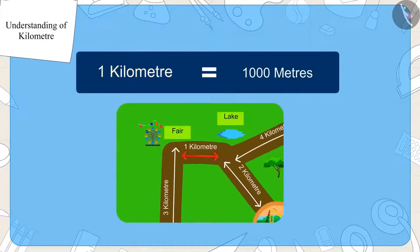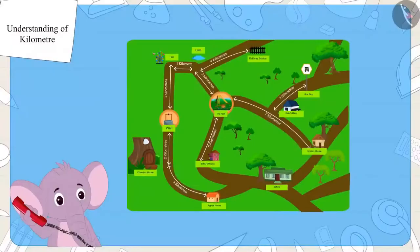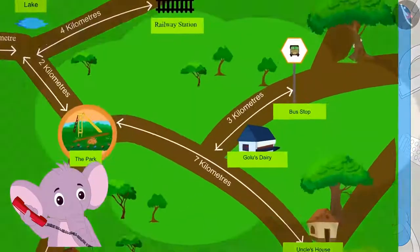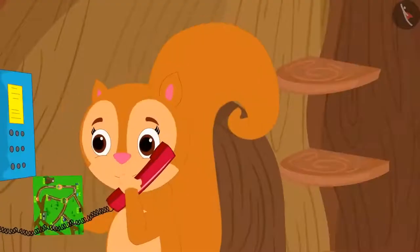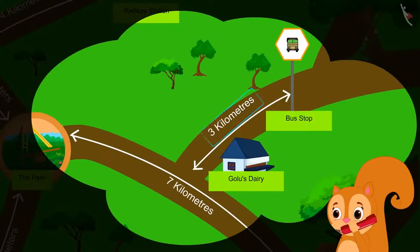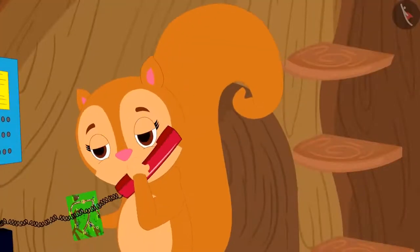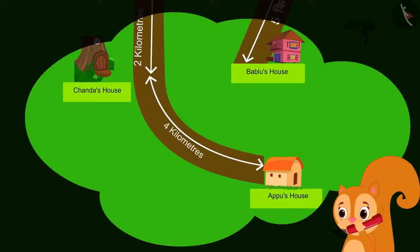One kilometer is equal to one thousand meters. Appu told Chanda, can you see Golu's dairy on the map? The dairy is three kilometers away from the bus stop. Chanda quickly noticed the places on her map and also saw the distance written between them. Chanda said to Appu, I can see your house and mine on the map too, and four kilometers is written between your house and my house.